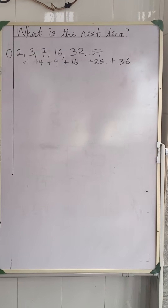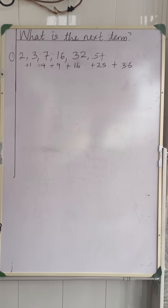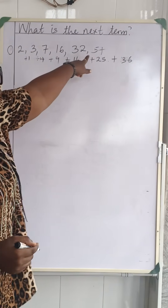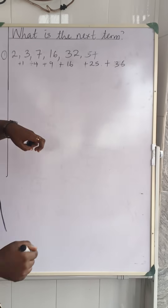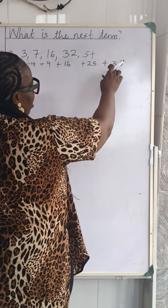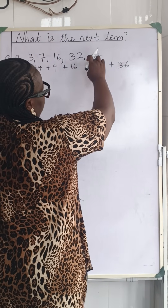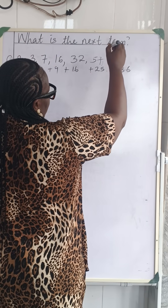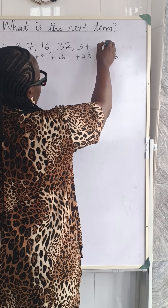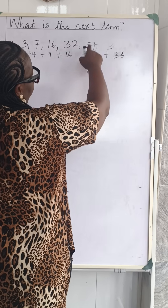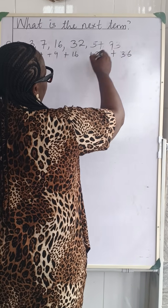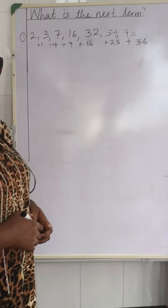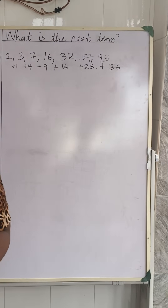That gives us 57. Then for the next term, we add 36: 6 plus 7 is 13, write the 3 and carry 1; 3 plus 5 is 8 plus the carried 1 is 9. So the next two terms are 57 and 93.